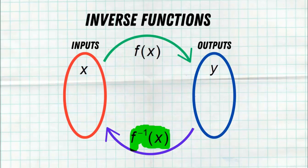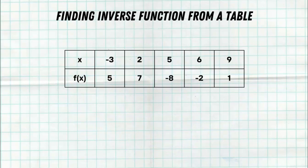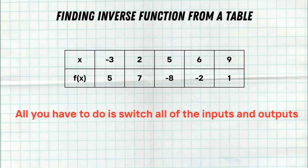Let's talk about how to find inverse functions first when you're looking at a table. This is actually the easiest thing to do. When you have an input-output table, first confirm that this is a function: negative three goes to five and nowhere else, two goes to seven and nowhere else. Now how do I create the inverse function for this table? Well, it's really easy — all you have to do is switch all the inputs and outputs. It's that easy.